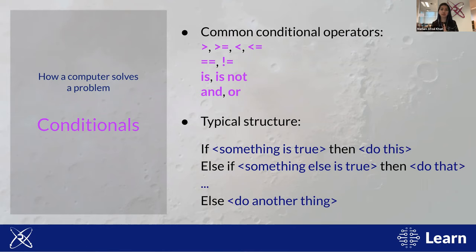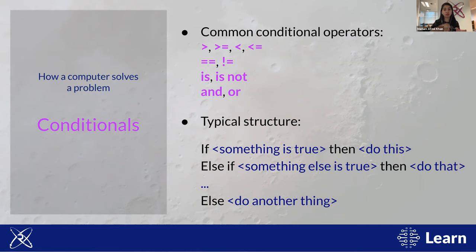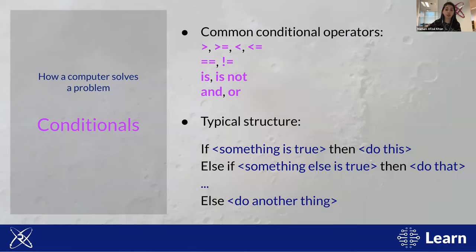What kinds of conditions can we check? Pretty much anything that evaluates to true or false — for example, is this number greater than that number, does this string equal another string, or you can combine expressions with 'and' or 'or' to make more complex conditions. The typical structure of a conditional looks like: 'if something is true, do this; else if something else is true, do that; else do another thing.' That last 'else' is a catch-all for cases where none of the earlier conditions were true. Importantly, only one branch will be executed for each conditional block every time the program runs.